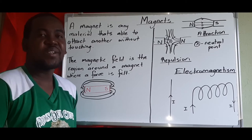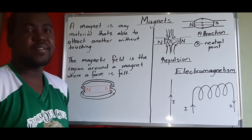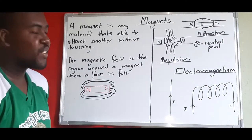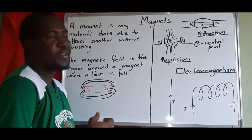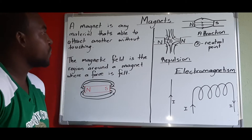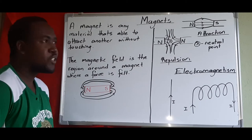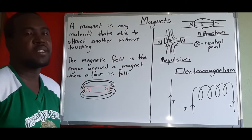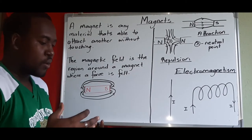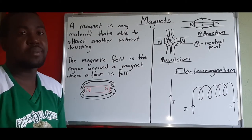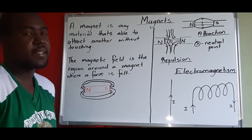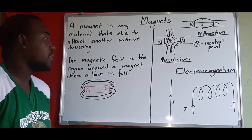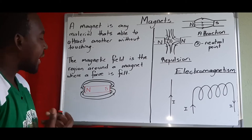Welcome to another lesson. Today we're looking at magnets. Magnets are a very playful thing we're used to — a material that attracts other metallic materials, or can repel or attract another magnet. That's basically what a magnet is at this level.